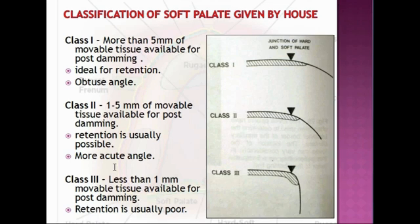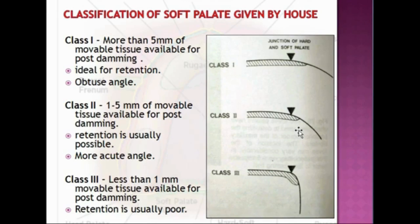In Class 1, the attachment is more or less horizontal and the soft palate needs to move very little to get contact with the posterior pharyngeal wall; this is most favorable for obtaining the posterior palatal seal. Class 2 has a medium attachment. Class 3 has a very low attachment where the soft palate needs to travel further to get a proper seal with the pharyngeal wall, and the soft palate is like a curtain falling abruptly from the hard palate, making the posterior palatal seal area minimum.